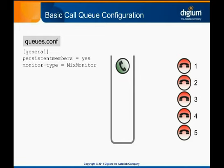To start configuring our queue, we'll add the name of the queue in square brackets at the end of the general section. We will call this queue Support. Immediately following the heading, we'll supply our queue options. Strategy declares what ring strategy will be used when trying to connect callers to members. Valid ring strategies include Ring All, Fewest Calls, Least Recent, and RR Memory, which stands for Round Robin Memory.